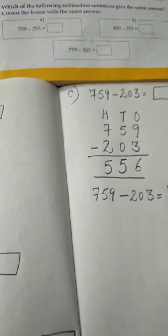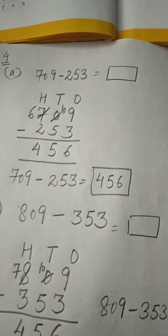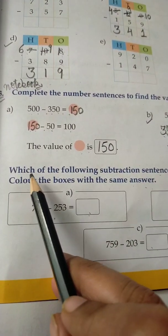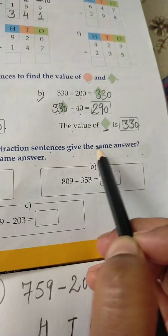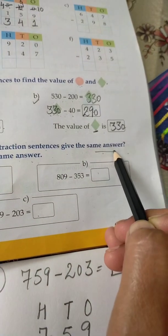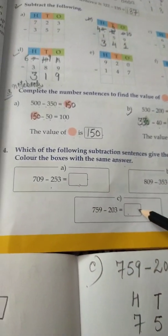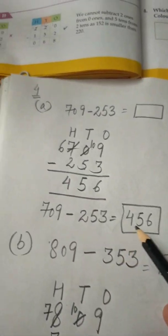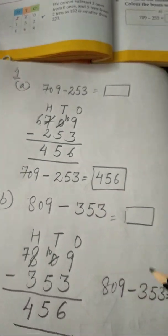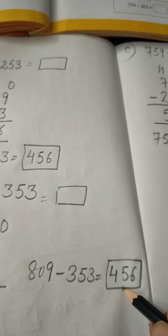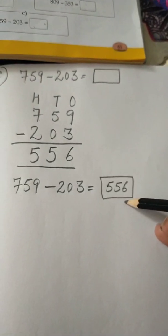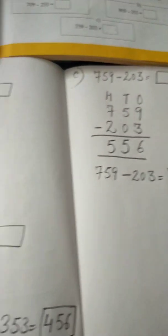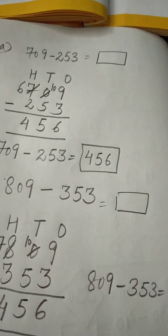Now students, we observe: the statement asks which subtraction sentences give the same answer. In a part the answer is 456, in b part the answer is also 456, but in c part the answer is 556. So a and b have the same answer — we have to color those boxes.